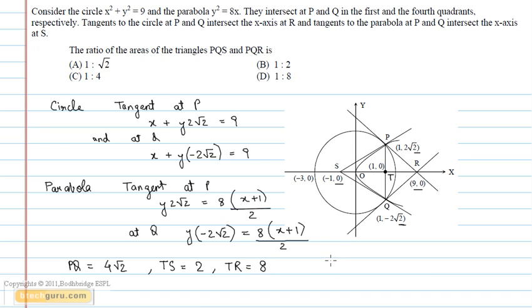Area of triangle PQR is equal to 1/2 × 4√2 × 8, which is equal to 16√2. Whereas area of triangle PQS is equal to 1/2 × 4√2 × 2, which is equal to 4√2. The ratio is 1:4, which is option C.